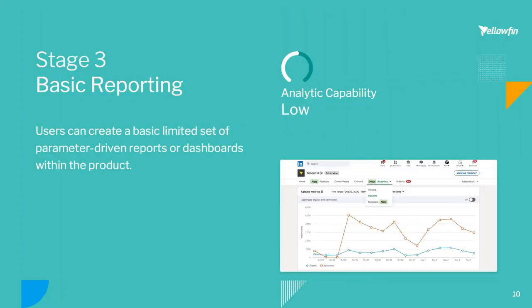Looking at stage three — you're offering essentially basic analytics and basic reporting. This might be a preset, parameter-driven dashboard within the product — the bare bones, basic analytical capability beyond just an output, providing a bit of visualization based on what is most likely a growing customer need. While this is some capability, it is fairly low on the spectrum because ultimately to do this, you are more likely building this in-house. You're taking developer resources away from your core application to not only build this once, but also maintain it going forward.